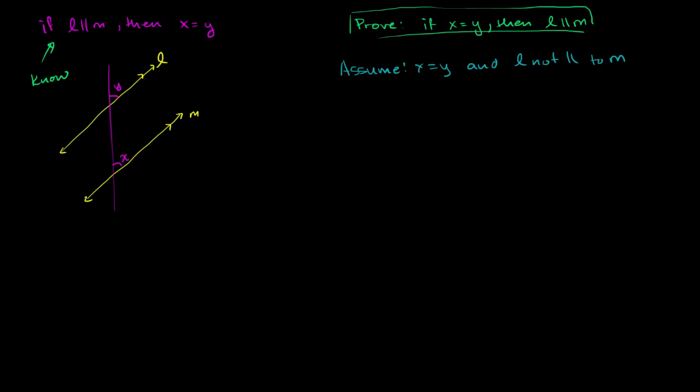So if L and M are not parallel and they're different lines, then they're going to intersect at some point. So let me draw L like this. This is line L. Let me draw M like this. They're going to intersect. By definition, if two lines are not parallel, they're going to intersect each other. And that is going to be M.